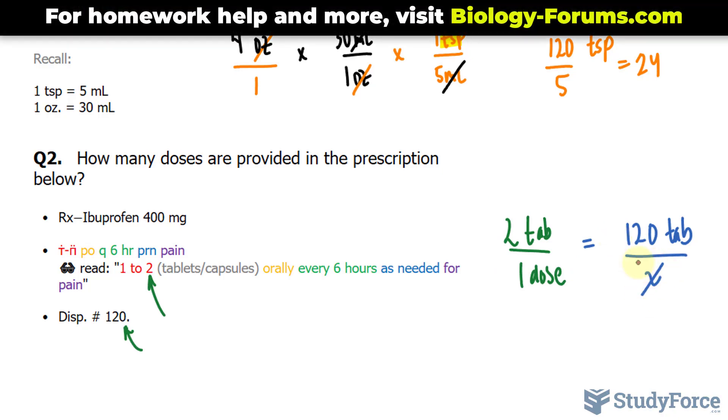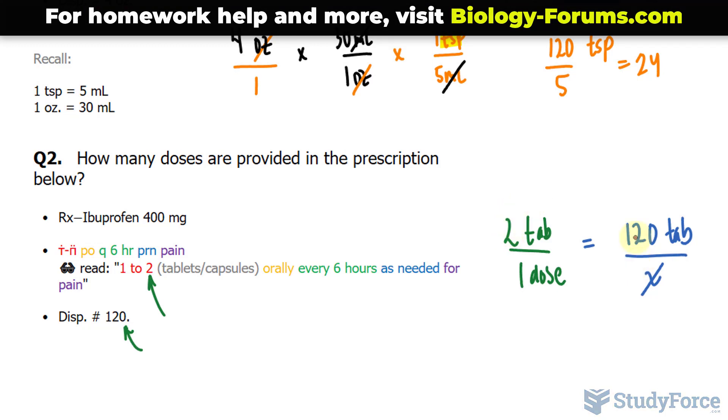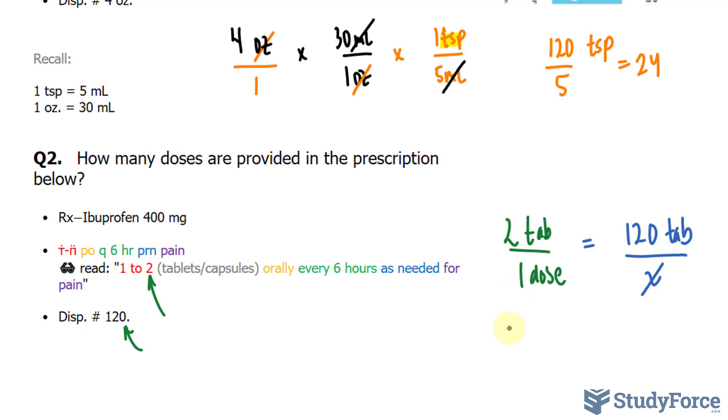Or of course, you can do this visually by inspection. Take for example, two times 60 gives us 120. So you multiply one times 60, x should equal to 60. Now that's by visual inspection.